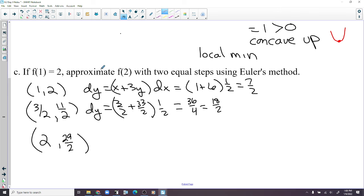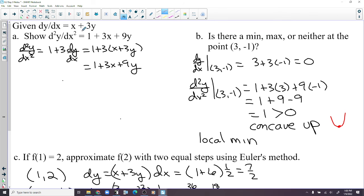Here, if f of 1 equals 2, approximate f of 2 with 2 equal steps using Euler's method. So we start with the point 1, 2, and we have 1, 3 halves, and 4 halves. And that's how you get to 2. So x is increasing by a half. So if we split the differentials, if we multiply dx over, we get x plus 3y times dx.